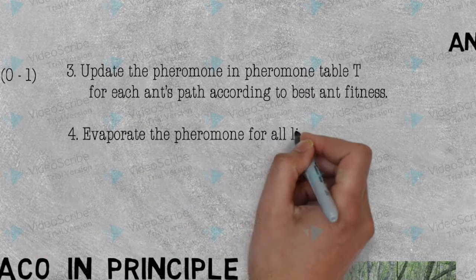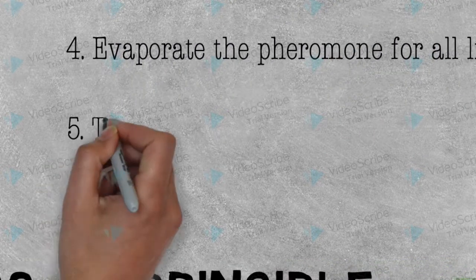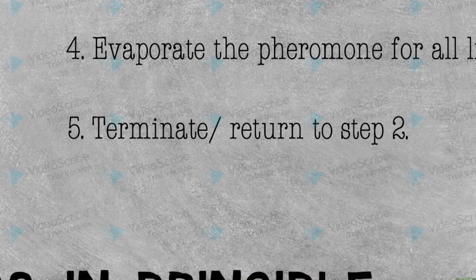Fourthly, evaporate the pheromone for all the links in the graph. Fifthly, if a termination criterion has been reached, then stop. Otherwise, return to step 2.